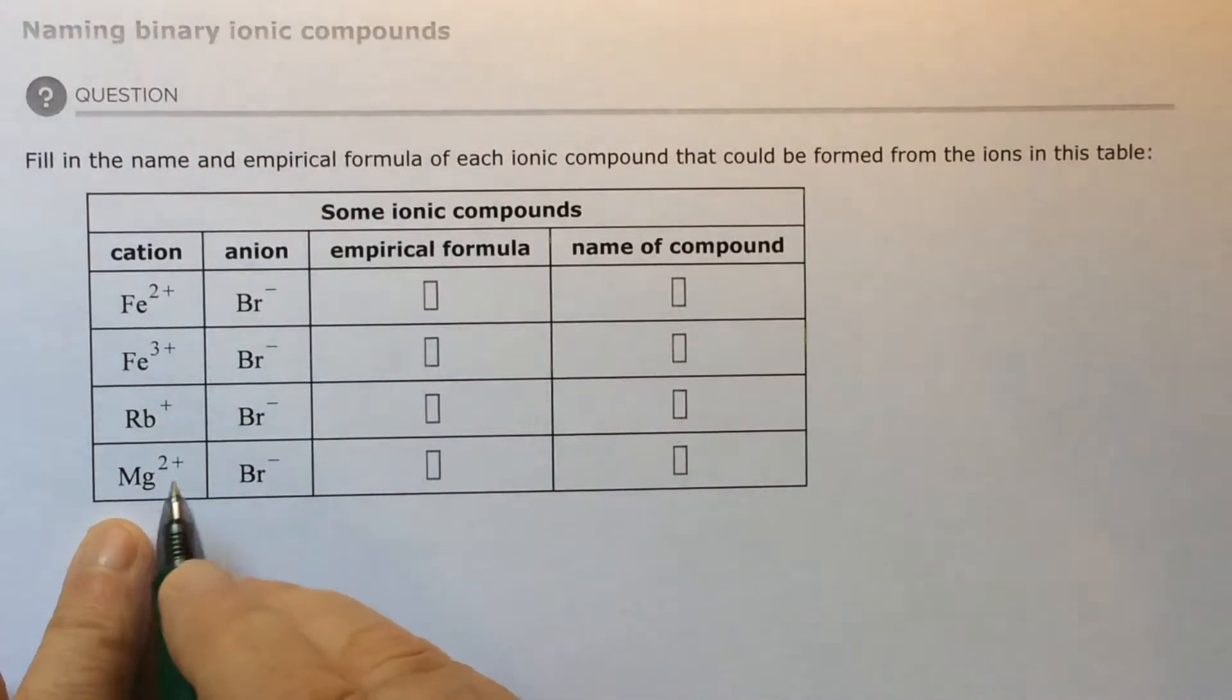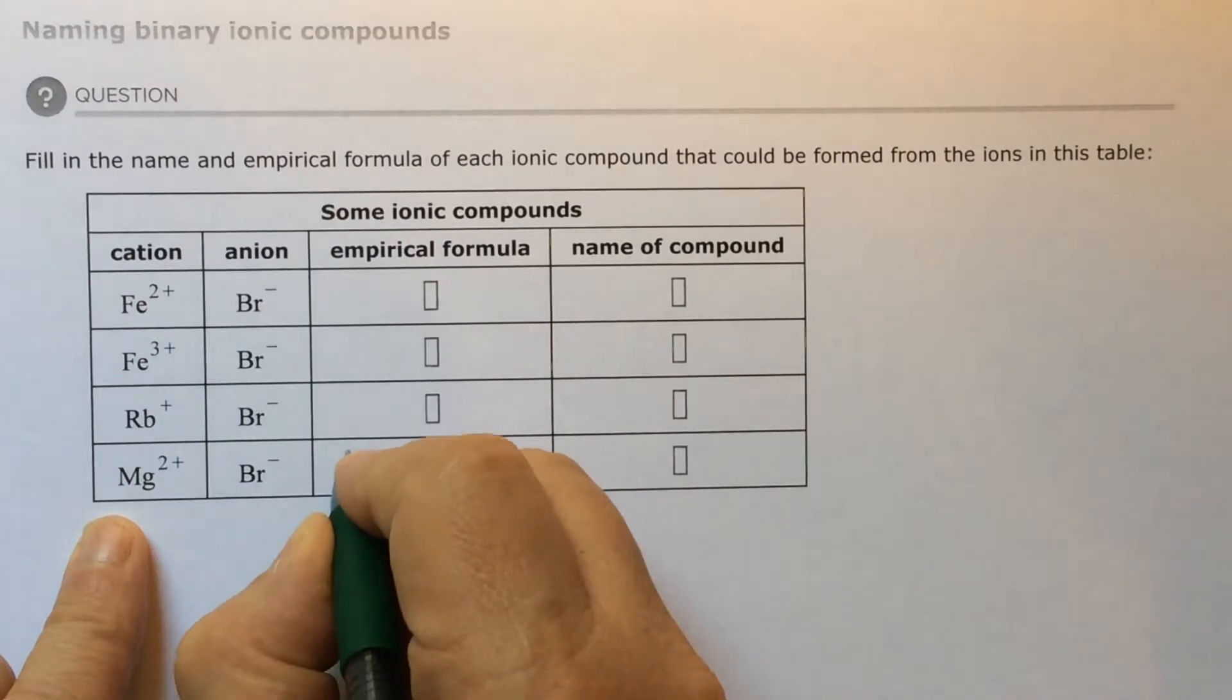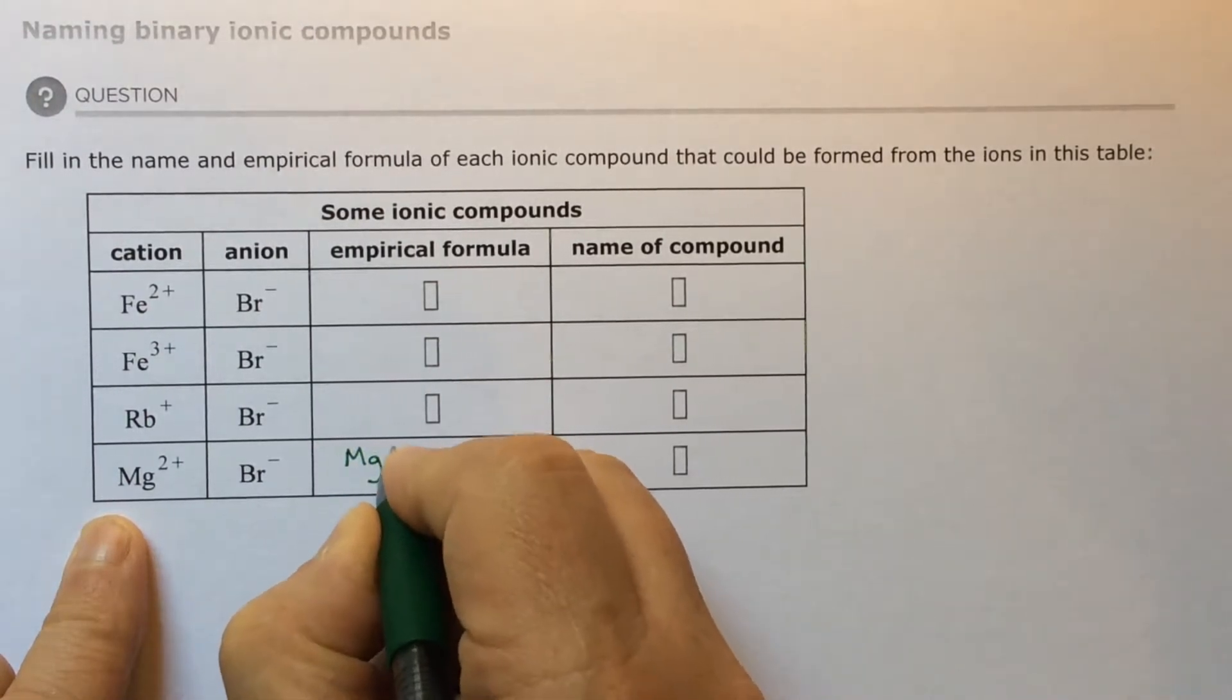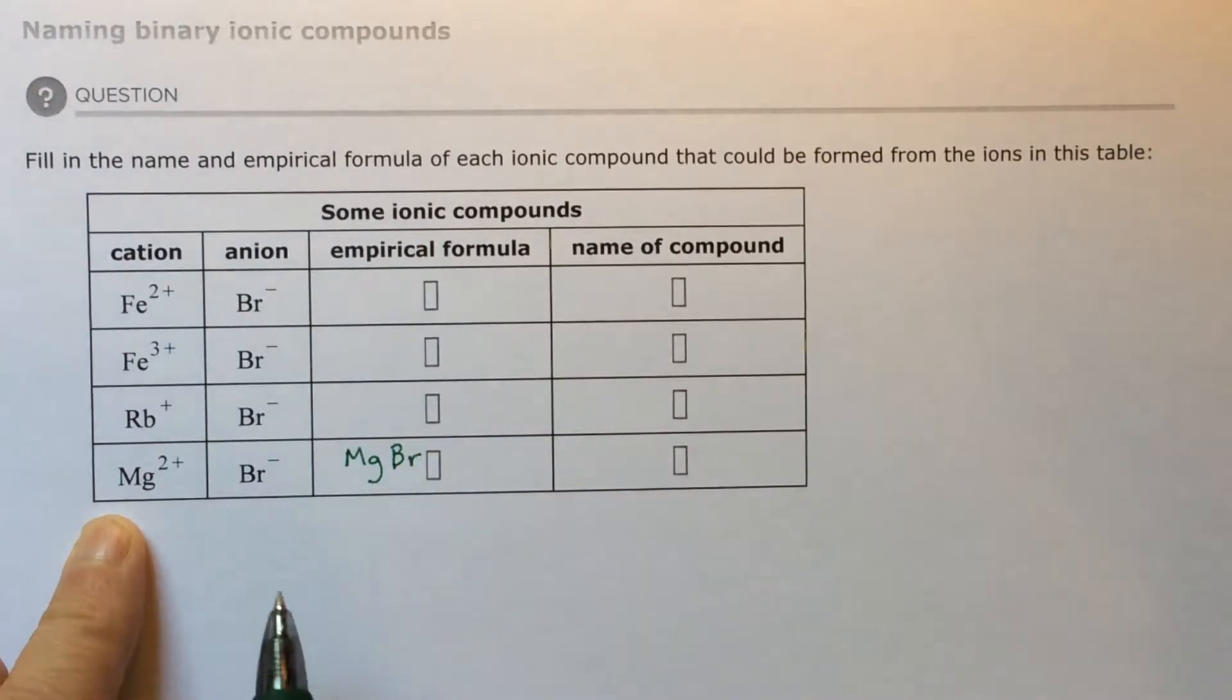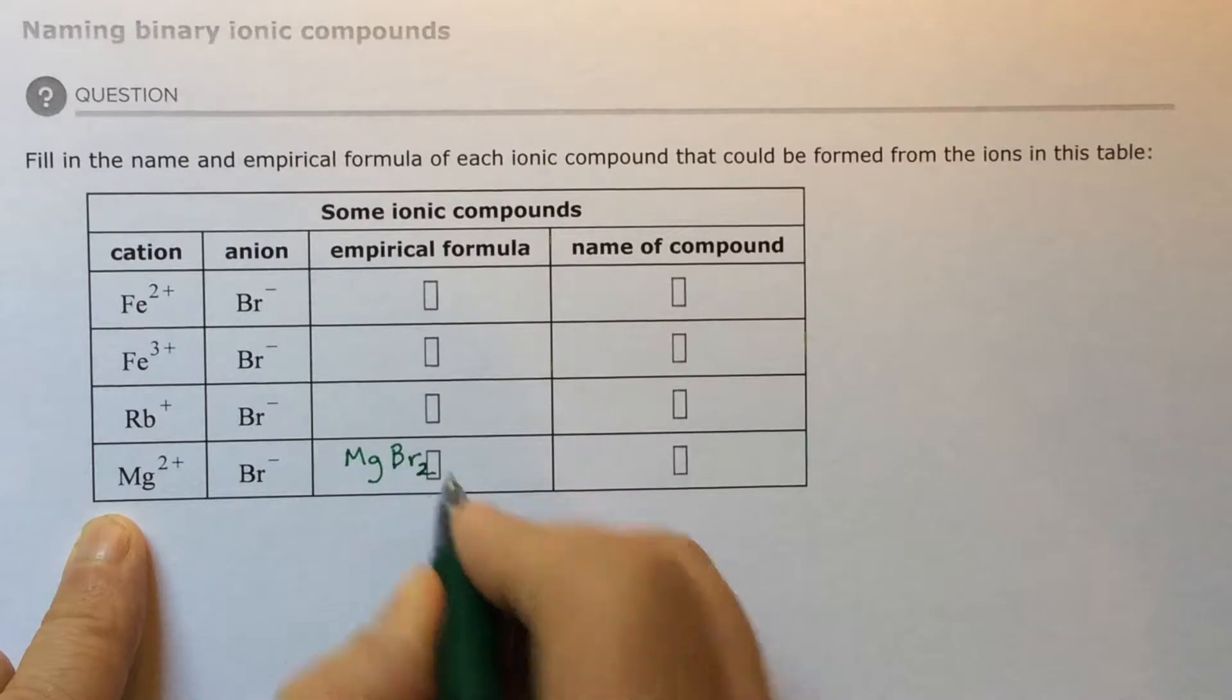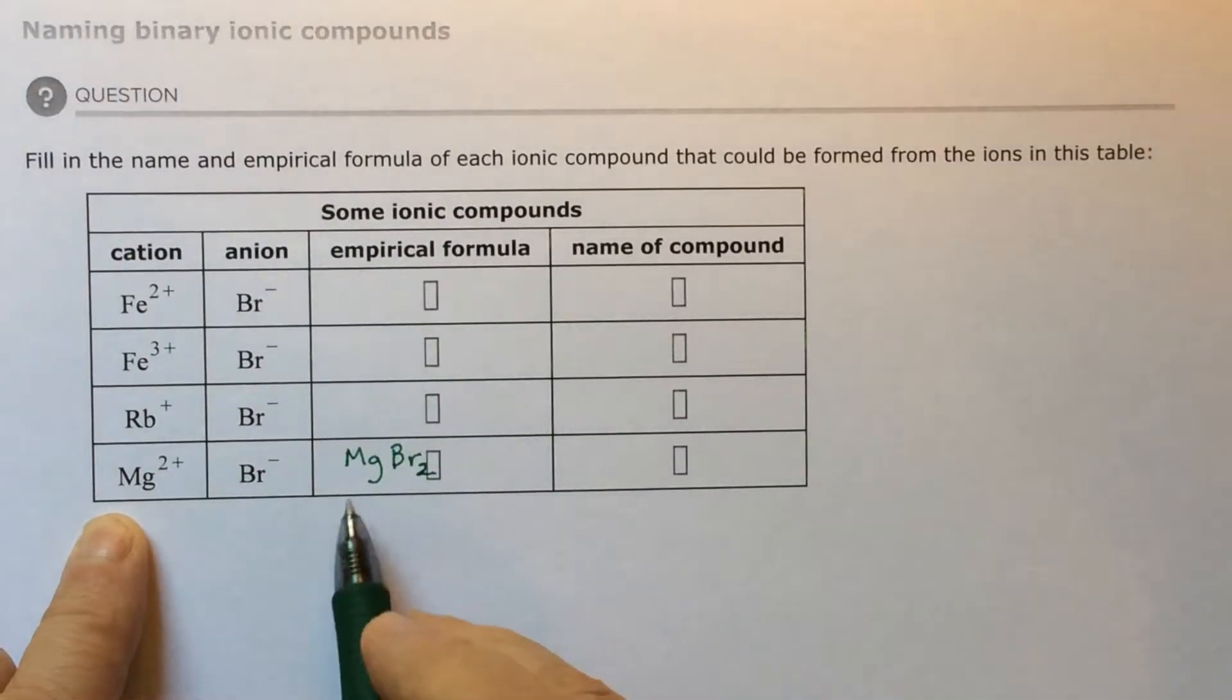Let's put it together. Magnesium has positive two. You're going to put bromine beside it. How many bromides are you going to need to balance this positive two? I've got negative one and positive two. I need two negative ones to balance with two positives. So it's going to be MgBr2 as its empirical formula.